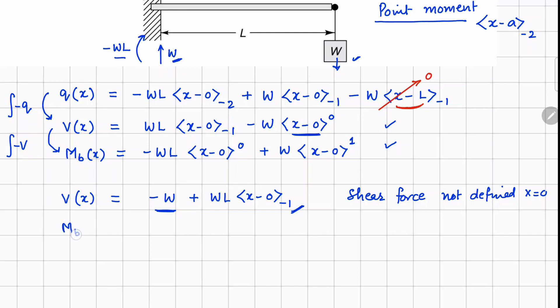Then if you calculate your M_b function, (x minus 0) to the power 0 will give you 1, so minus WL plus this one. (x minus 0) to the power 1 will give you W times x, so you can simplify this as W(x minus L).